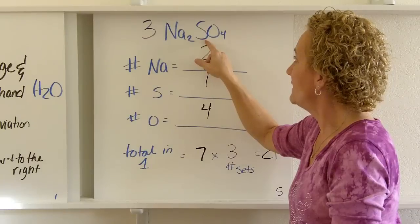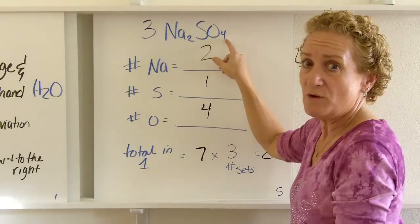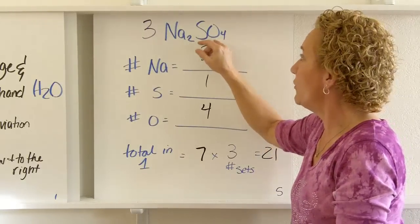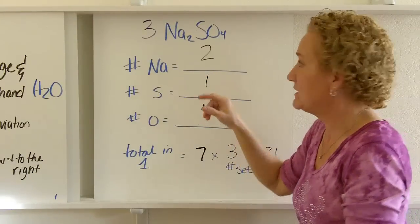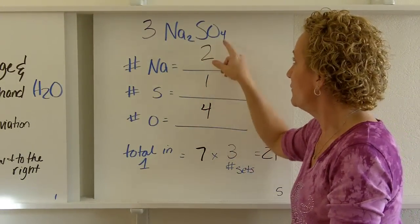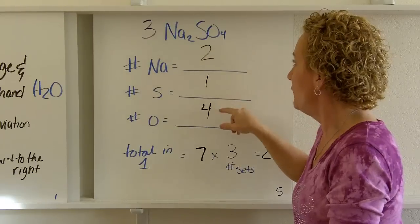How many S's? Are we going to multiply it by the 4? Nope, because we don't have parentheses. And that 4 only acts on the thing immediately preceding it. So how many S's? We have 1. How many O's? That's where your 4 is. We have 4.